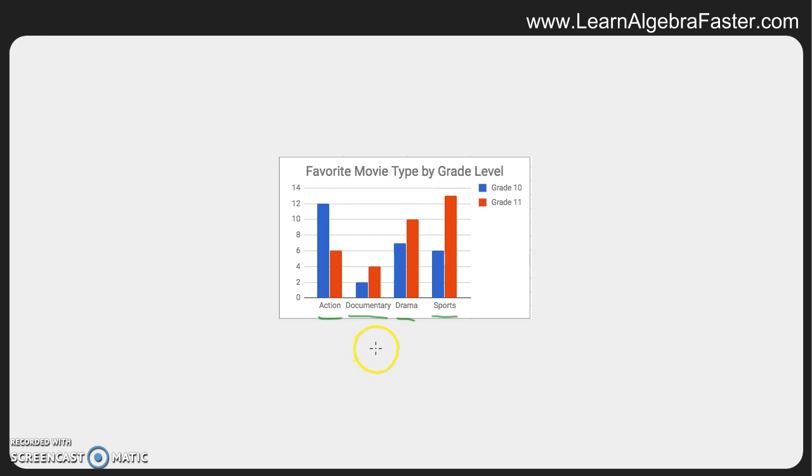Not only are we discussing and comparing the four different types of movies, we're also discussing how those movies are preferred by two different grade levels. This bar graph is cool because you can look at the difference in grade level and the difference in movie. This is what we would call a double bar graph, and you see that because under each category there are two bars side by side.